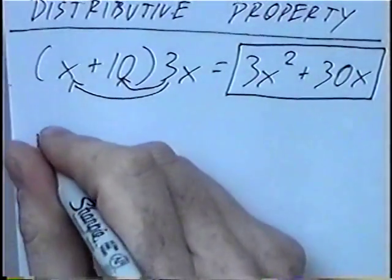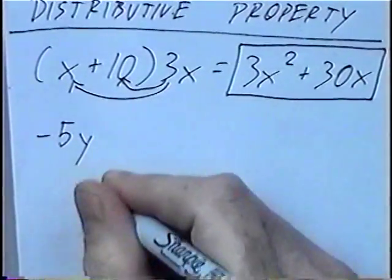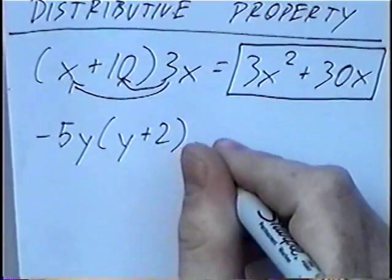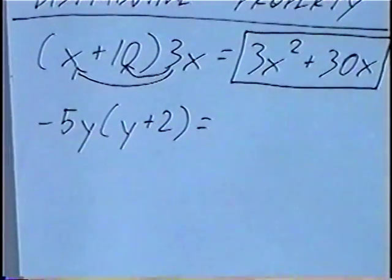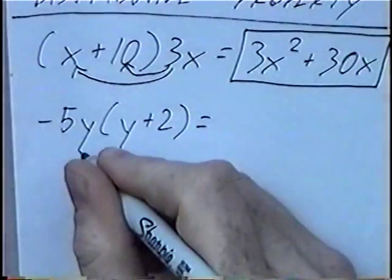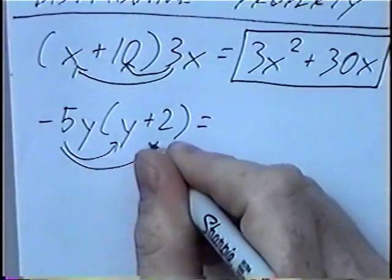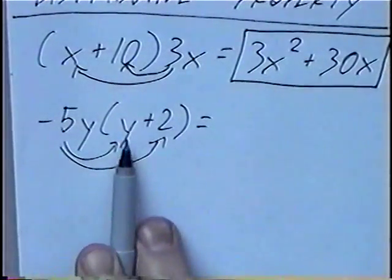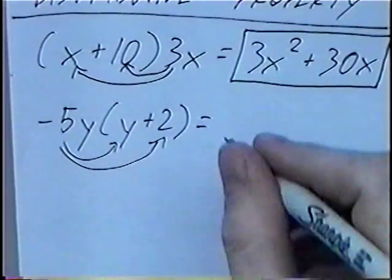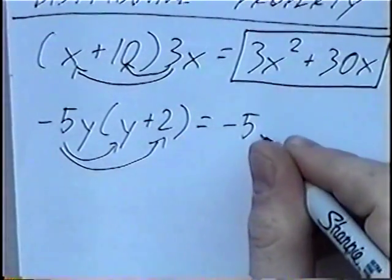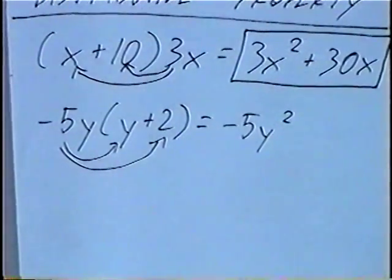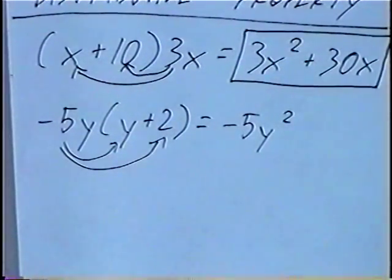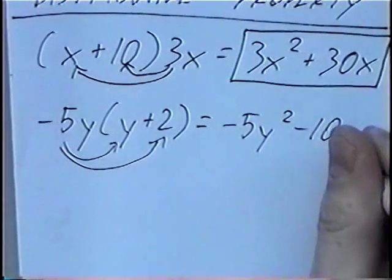Second question: negative 5y and inside parentheses y plus 2. Multiplying the term outside by each term inside. This time we have a negative 5y multiplying by y, so that'll be negative 5y squared. And negative 5y times a positive 2 would be negative 10y.